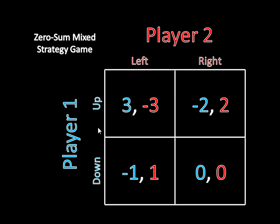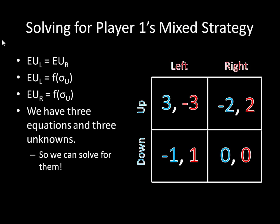So that sounded a little bit confusing — it will become clearer as we actually go about solving for the mixed strategies. Let's start off with player one's mixed strategy. What we're trying to do here is come up with a mixed strategy for player one that makes player two's expected utility for left equal to her expected utility for choosing right as a pure strategy. Player two's expected utility for left is a function of the mixed strategy sigma_u, which represents the probability that player one plays up. If player two plays left, she's at the mercy of player one's decision between up and down to determine what her payoff is — whether it's negative three or one.